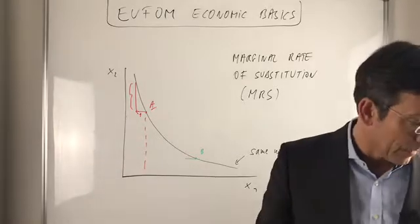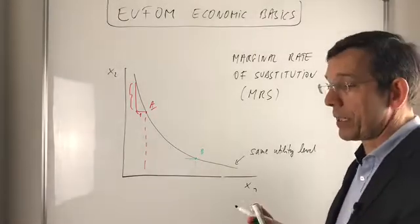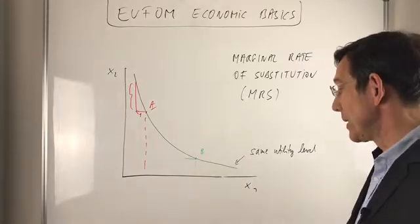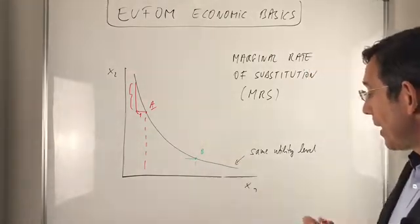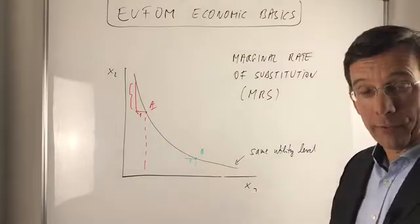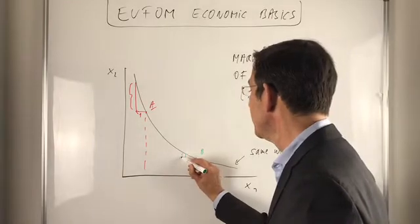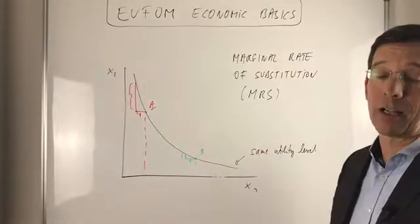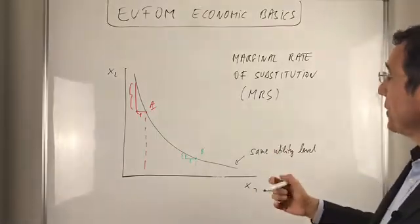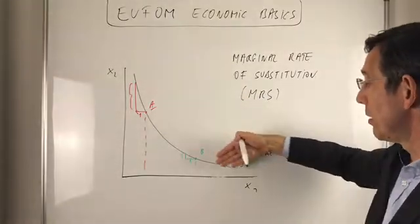On the other hand, if you already have a lot of x1, your marginal utility to get another unit of x1 is quite low. So if you have a lot of x1 and you have to give up one unit of x1, you only have to be compensated by a little bit of x2 to remain on the same utility level. That's the intuition. So the marginal rate of substitution is diminishing along the indifference curve.